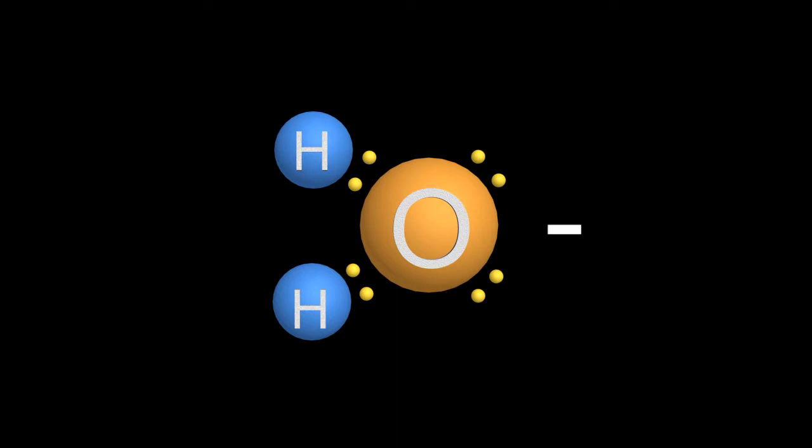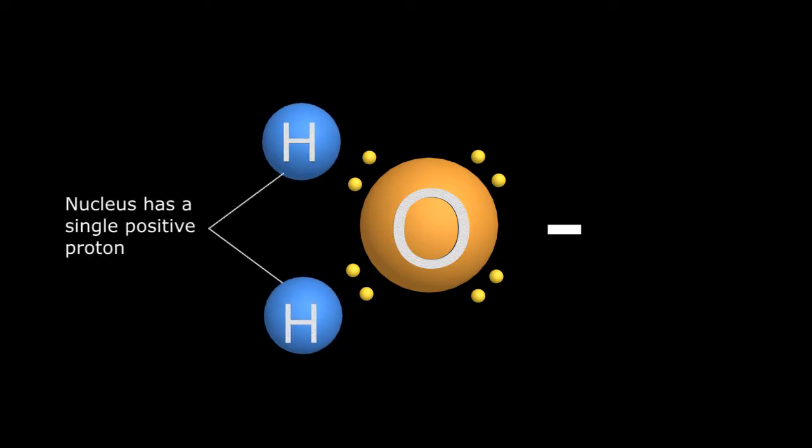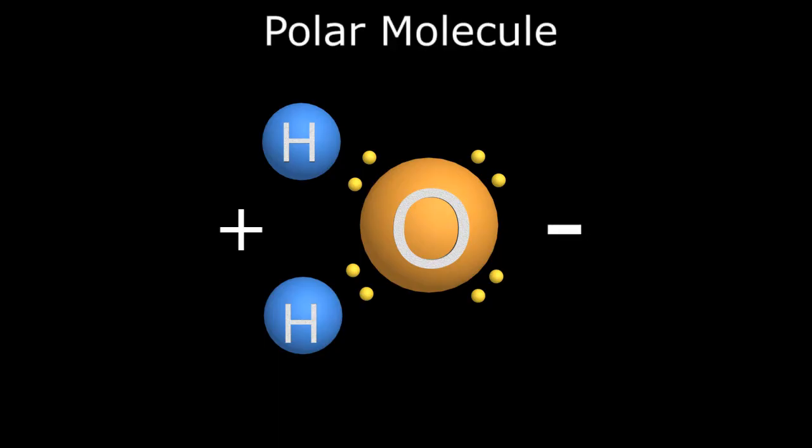In addition, the hydrogens asymmetrically share their single electrons more with the electrophilic oxygen atom and less with themselves. Since hydrogen has a single positive proton surrounded by a single orbiting electron, this asymmetric electron sharing causes this side of the water molecule to be slightly positive. With a positive charge on one side and a negative charge on the other, water is known as a polar molecule.